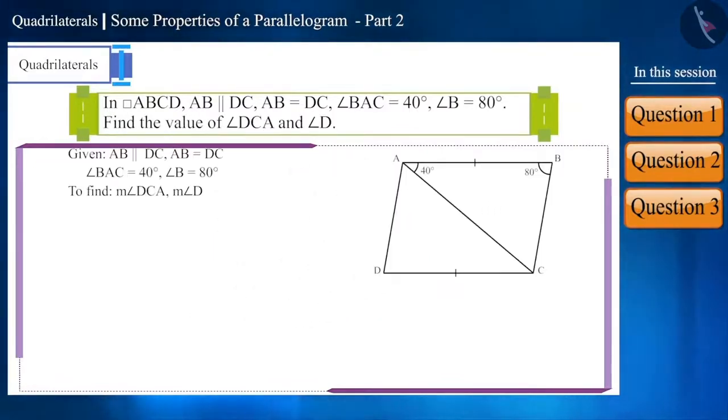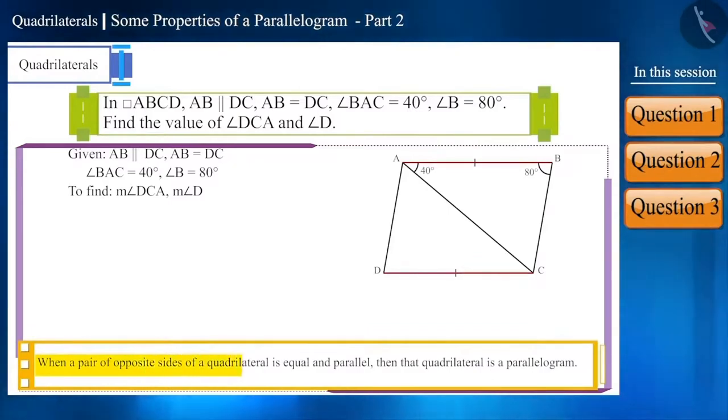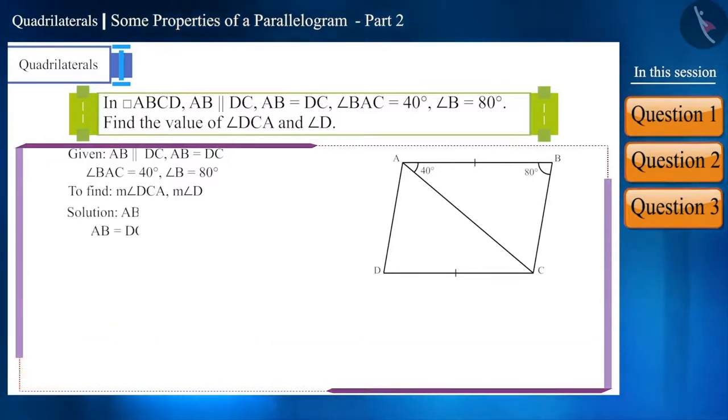We know that when a pair of opposite sides of a quadrilateral is equal and parallel, then that quadrilateral is a parallelogram. According to the question, side AB is equal and parallel to side DC. Therefore, quadrilateral ABCD is a parallelogram.